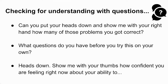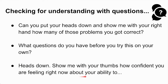Another common use of informal formative assessment is when teachers check for understanding with questions. After trying a few practice problems, teachers can ask their students to put their heads down and show with their right hand how many of those problems they got correct. We can also ask students what questions they have before they try a new skill or concept on their own, or prompt students by saying, 'Put your heads down — show me with your thumbs how confident you are feeling right now about your ability to,' and then insert a description of the knowledge or skill being worked on.